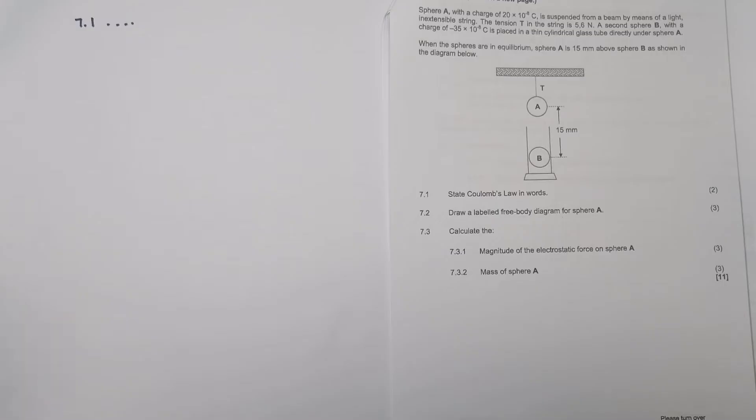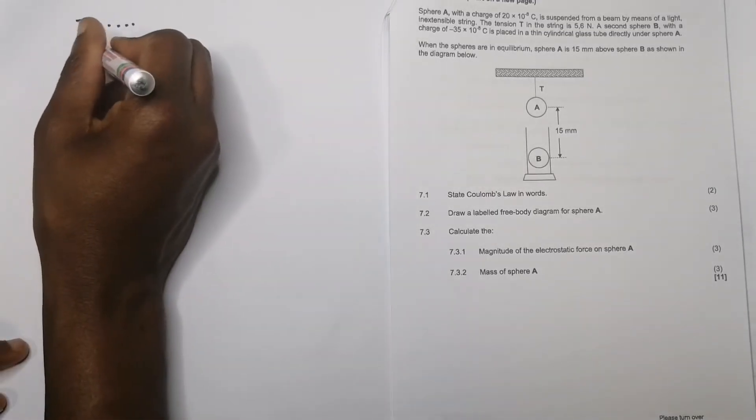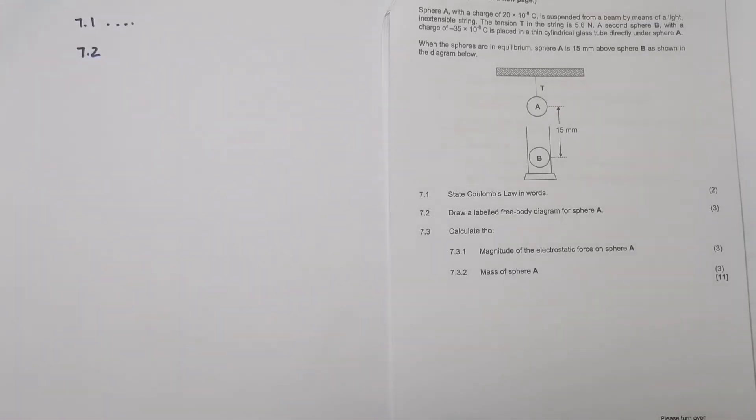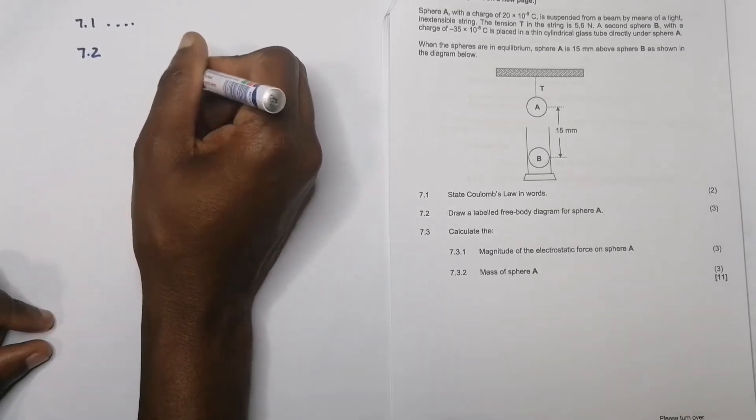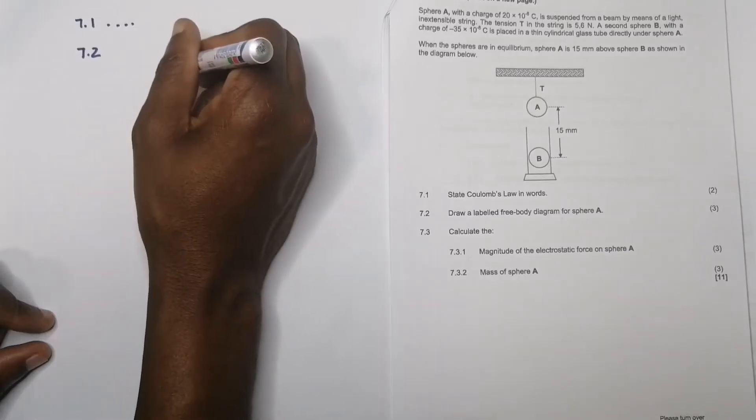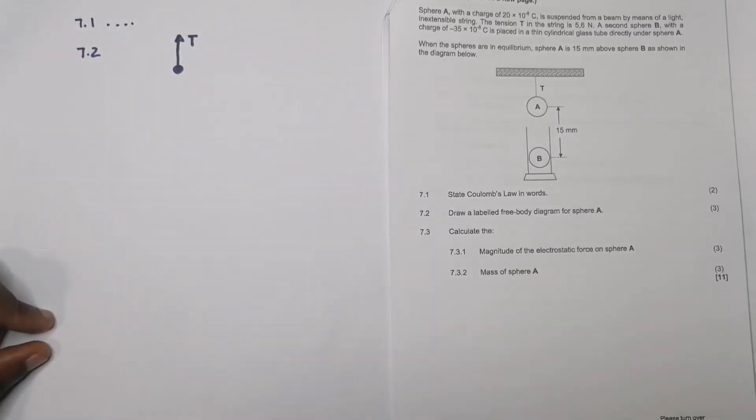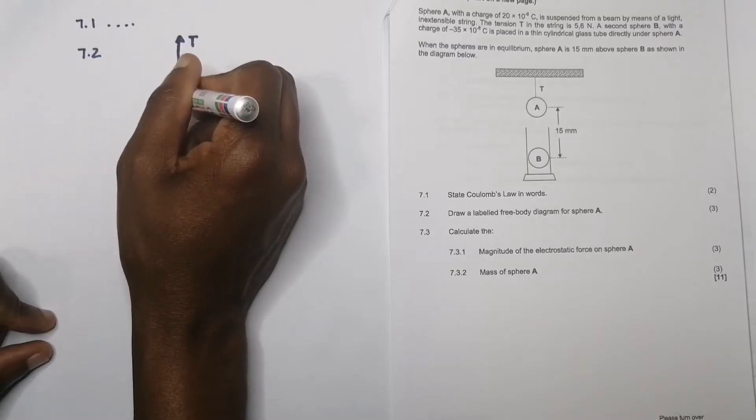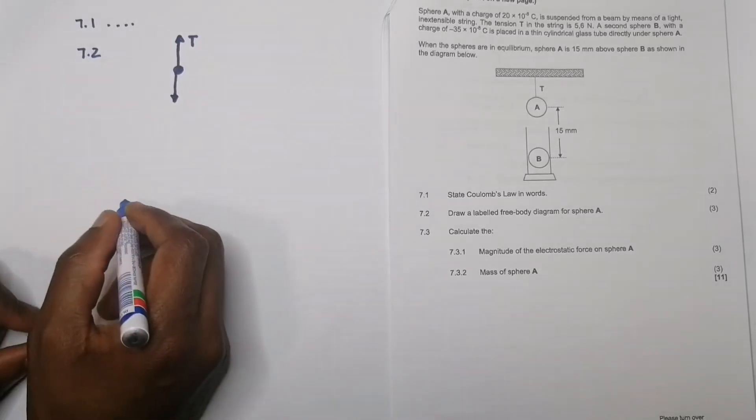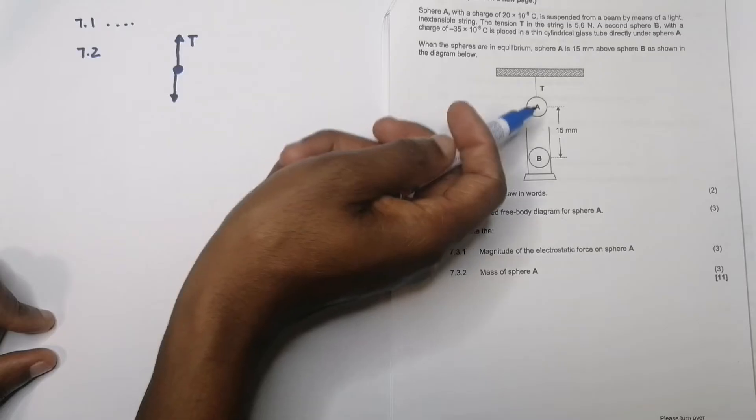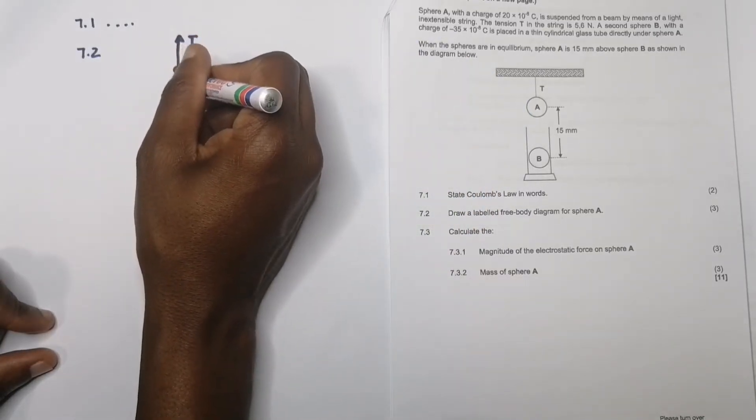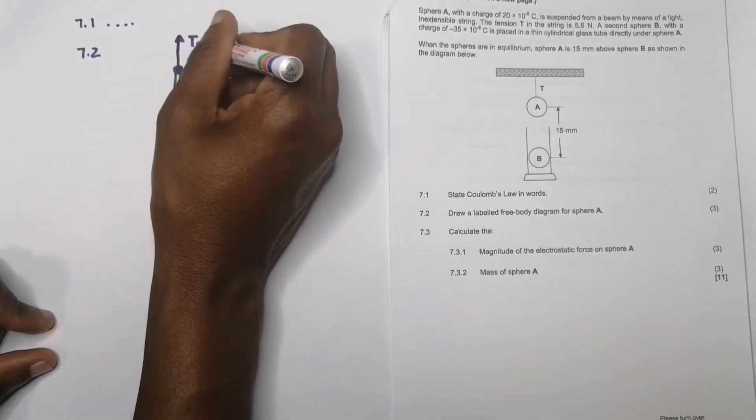On 7.2 they say draw a labeled free body diagram showing the forces acting on sphere A. We need to be careful. The tension is holding that guy up, so there's the tension force. But which other forces do we have? They are attracting each other—B is pulling A towards itself, so it's experiencing a force of attraction that is downwards.